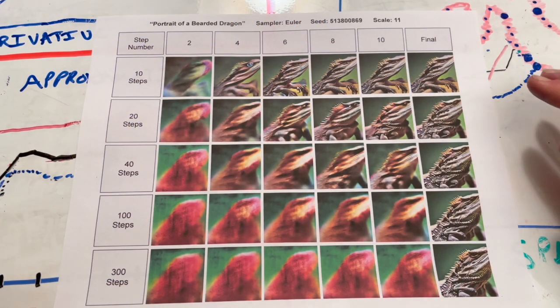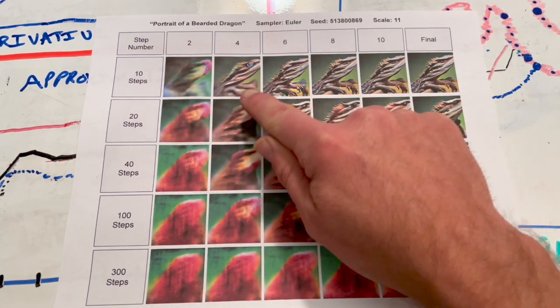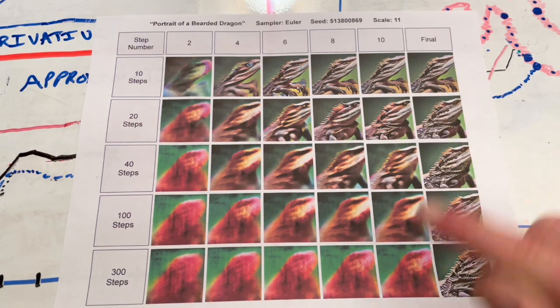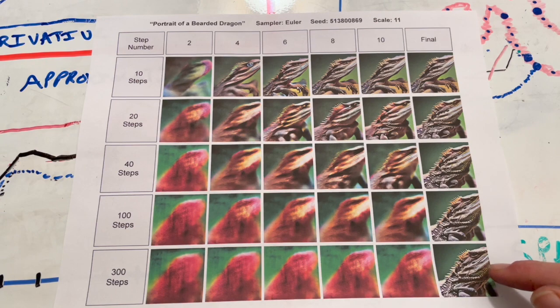Here with this portrait of a bearded dragon, you can see that the step size does matter. The final output changes with the number of steps. Here we're taking these big, giant steps and forcing a convergence really fast, but here's where we take those little tiny micro steps and converge on this final image.